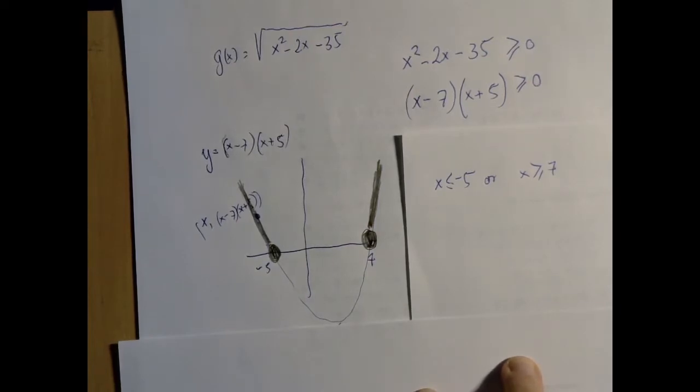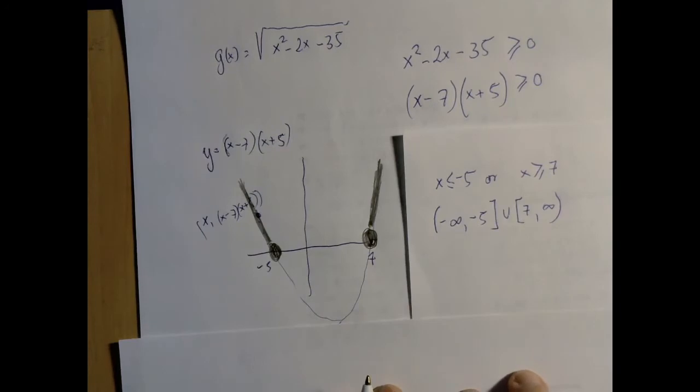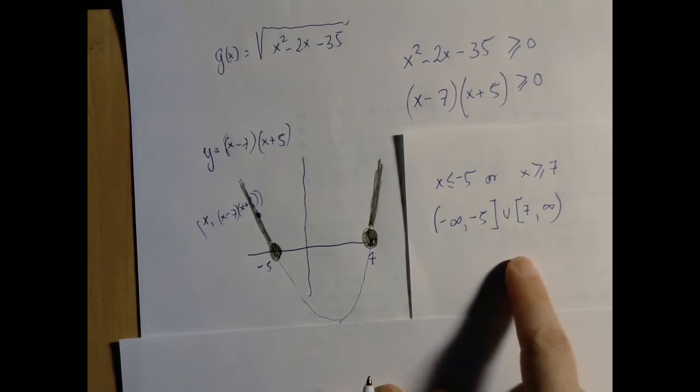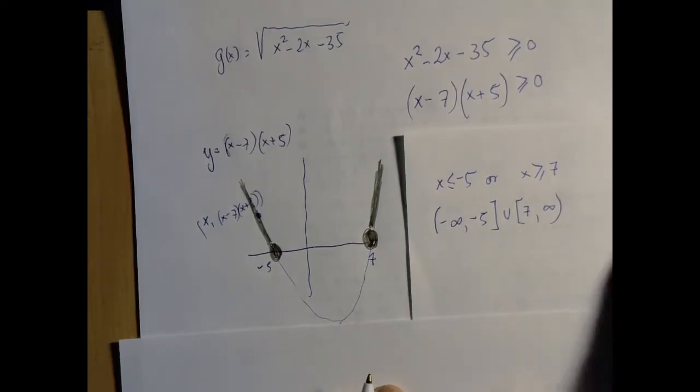The same solution set in interval notation is from negative infinity to negative 5, closed at 5, union, closed at 7, 7 to infinity. So that is our solution set. That is the domain of this function.